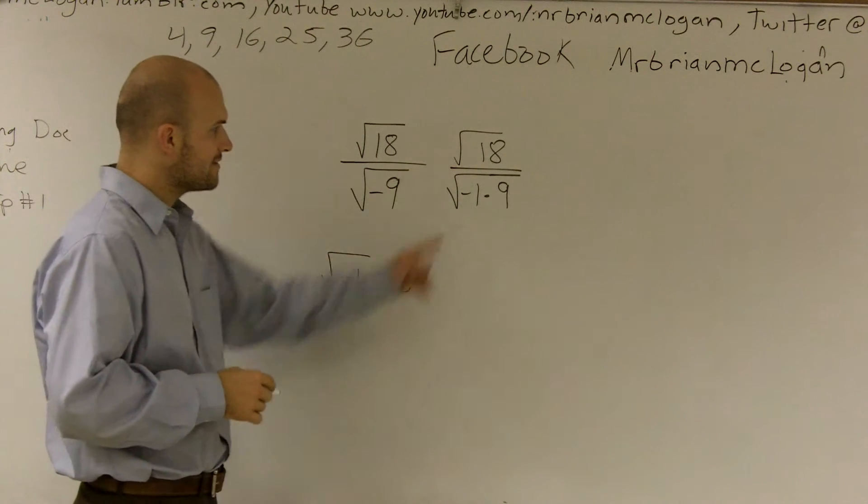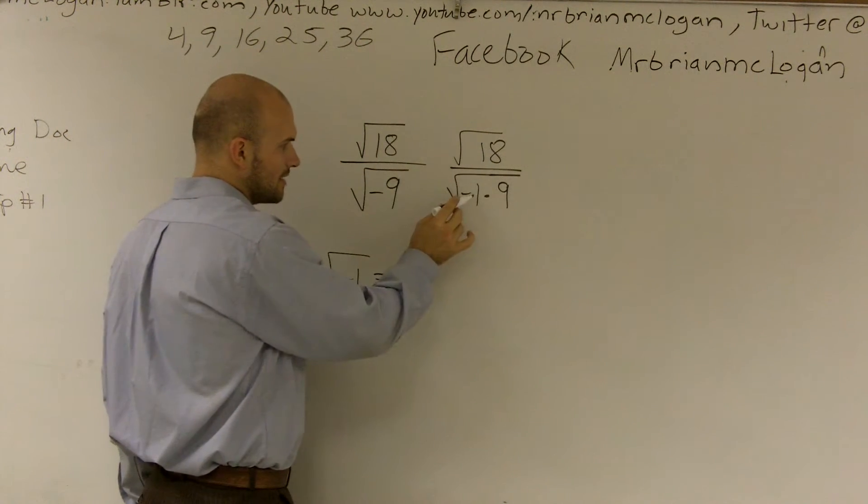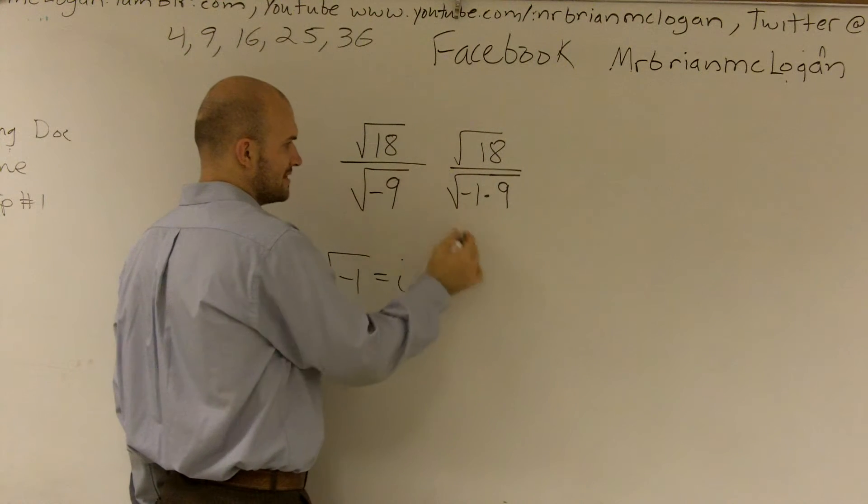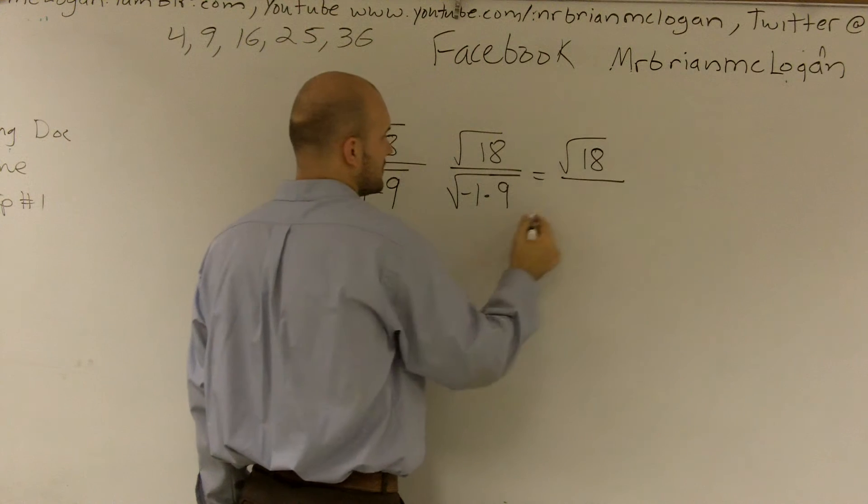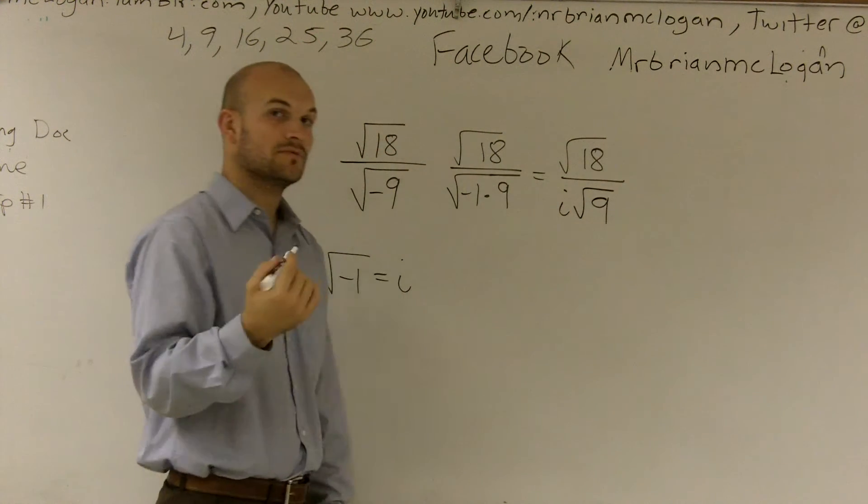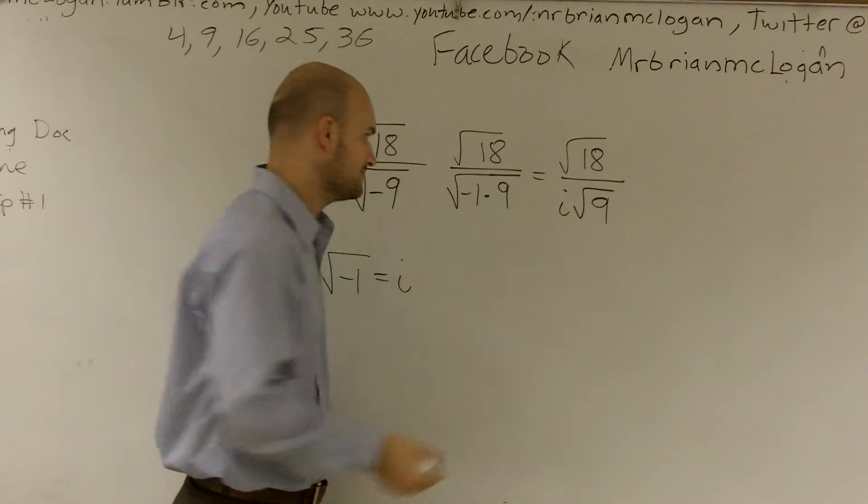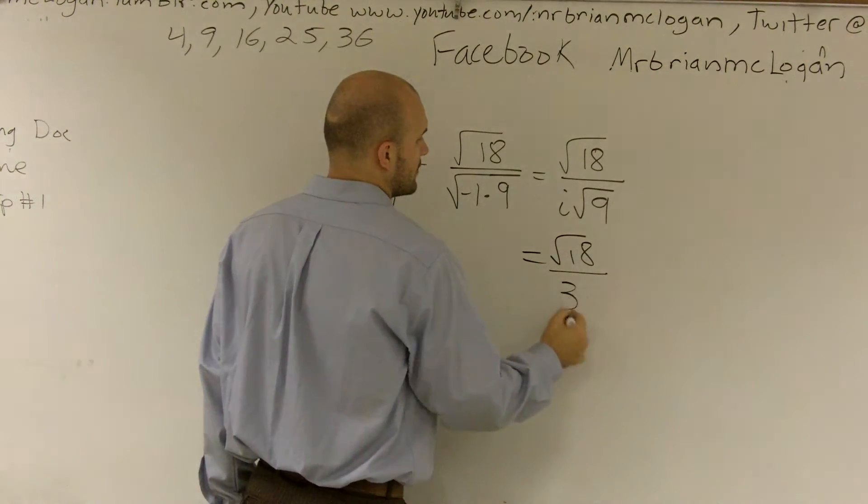So therefore, I really don't need to write this. I can actually say that this is now going to be square root of 18 over, and you can say i times square root of 9. Now, we know that the square root of 9 is going to be 3. So this is going to be square root of 18 over 3i.